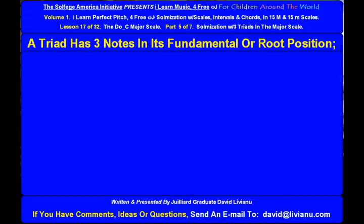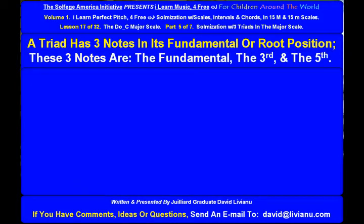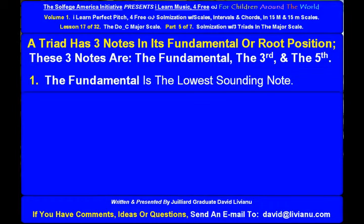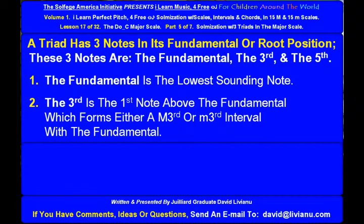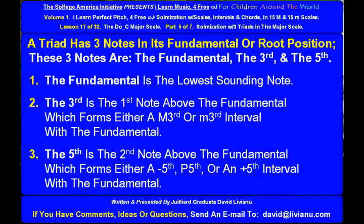A triad has three notes in its fundamental or root position. These three notes are the fundamental, the third, and the fifth. The fundamental is the lowest sounding note. The third is the first note above the fundamental which forms either a major third or minor third interval with the fundamental. The fifth is the second note above the fundamental which forms either a diminished fifth, perfect fifth, or an augmented fifth interval with the fundamental.